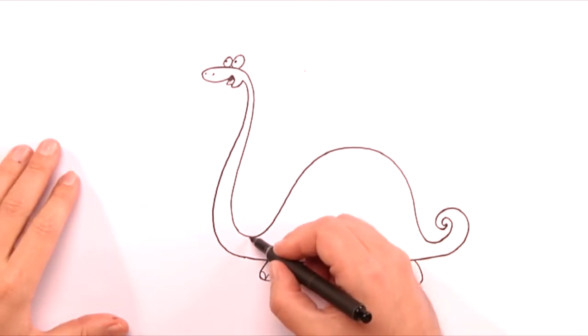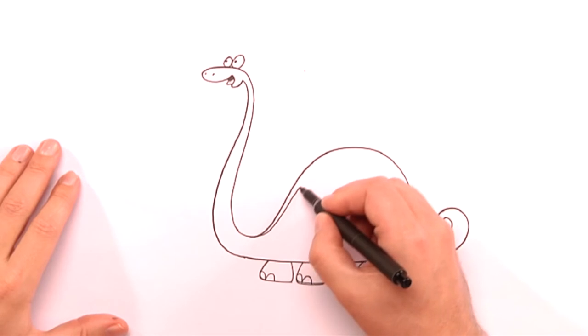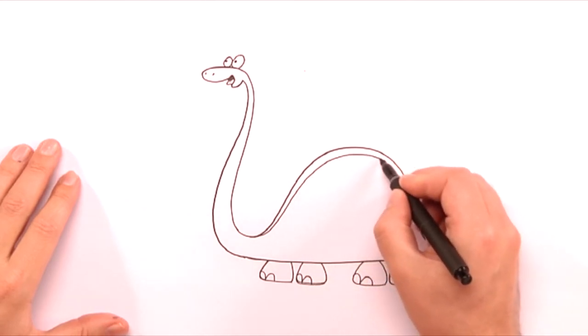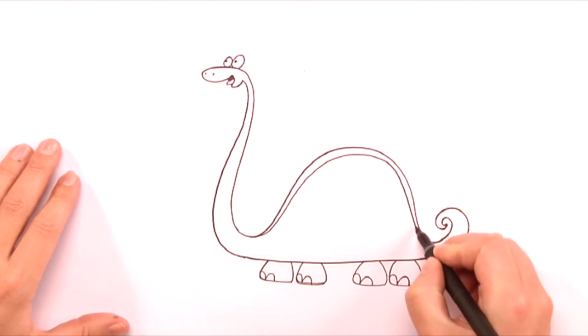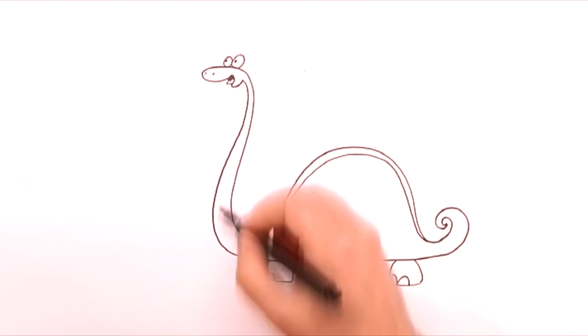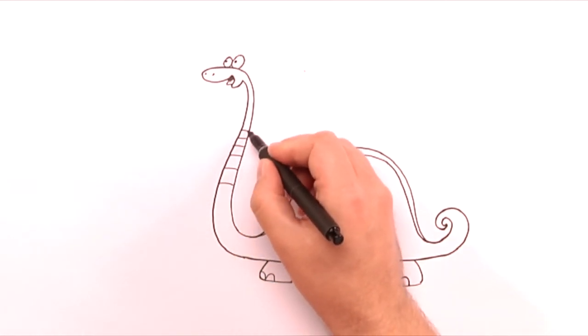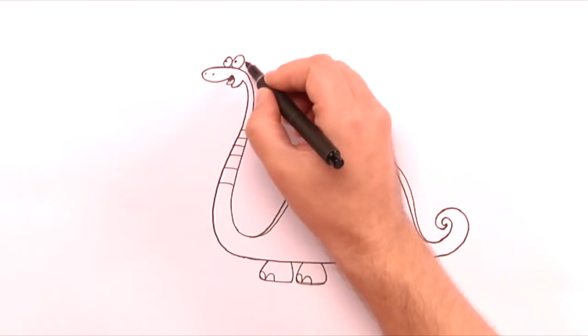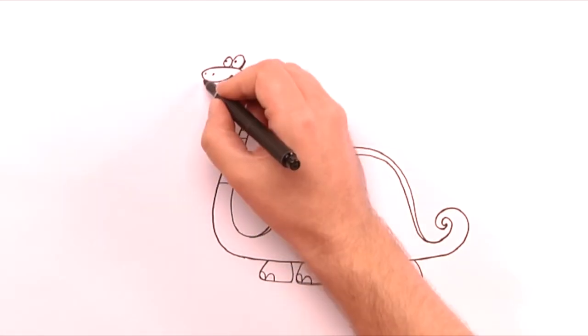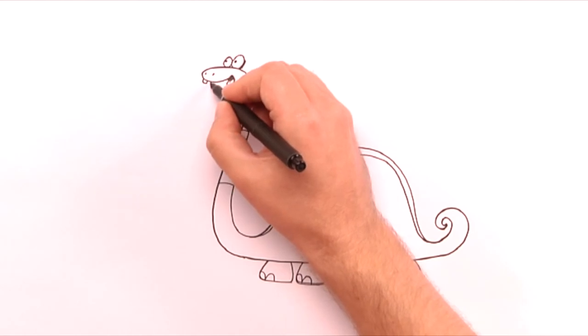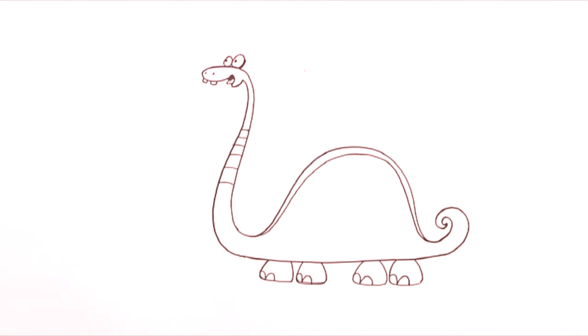And then an extra line for the spine. Let me see, what can we do to make it extra funny? Perhaps some stripes along the neck, and two teeth, and maybe lift the smile a bit.